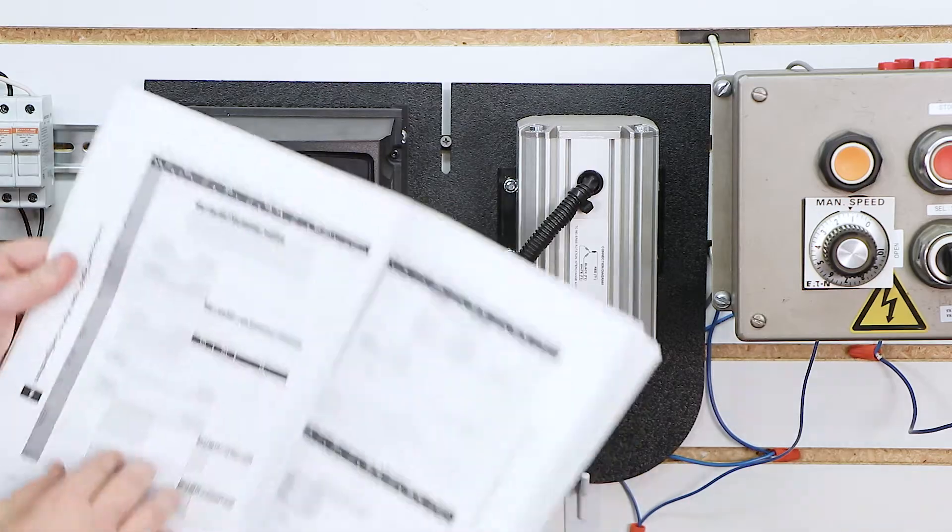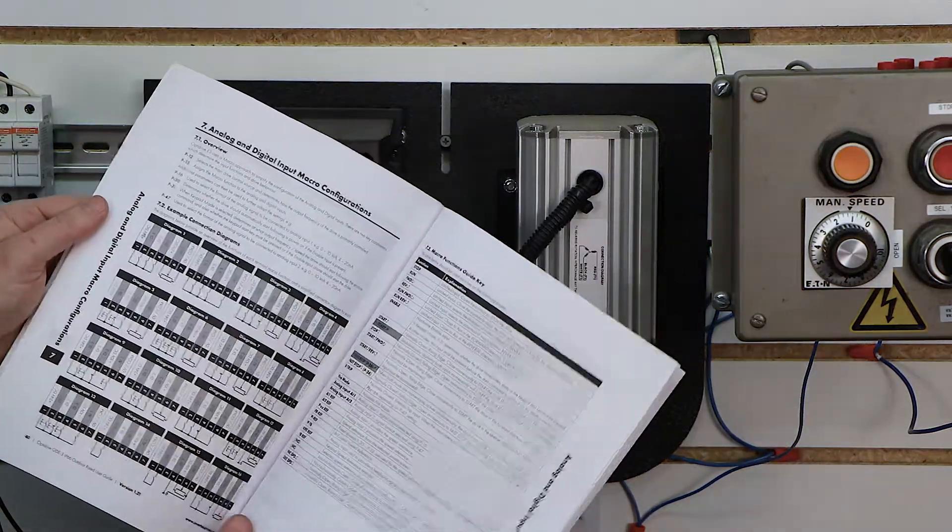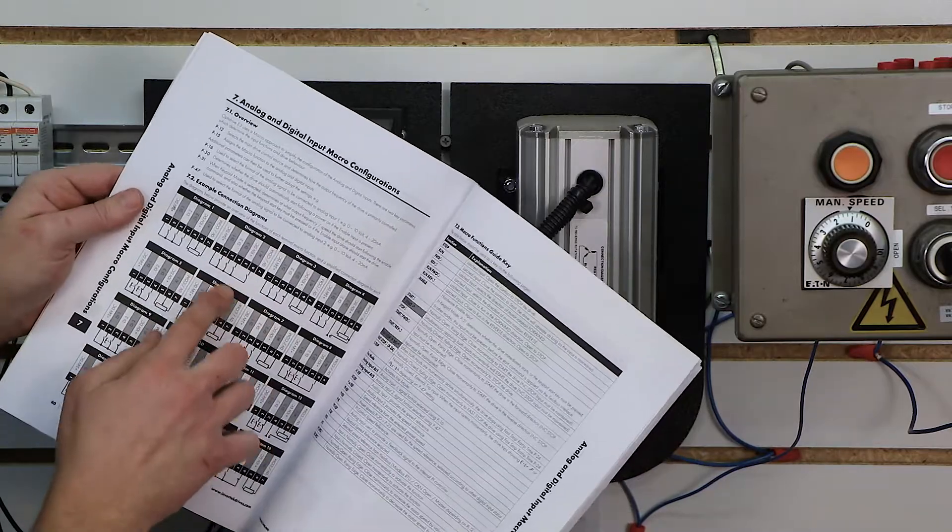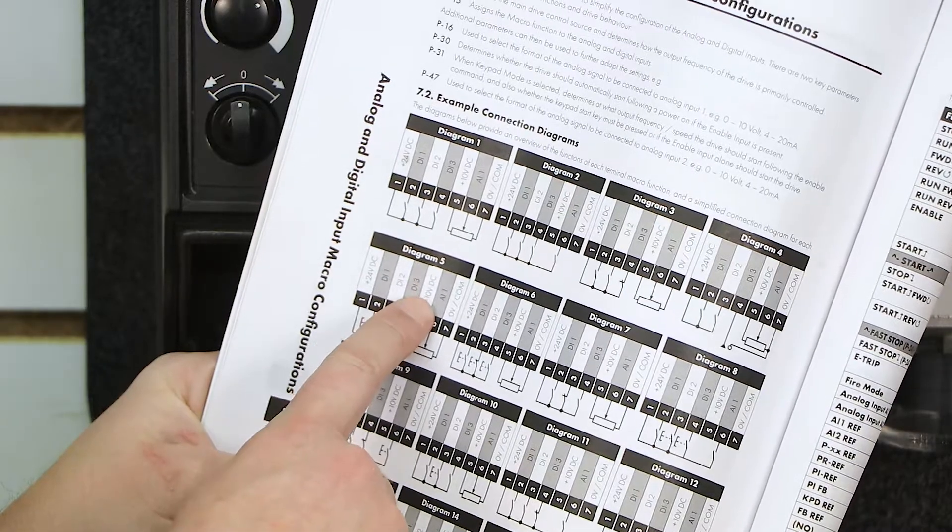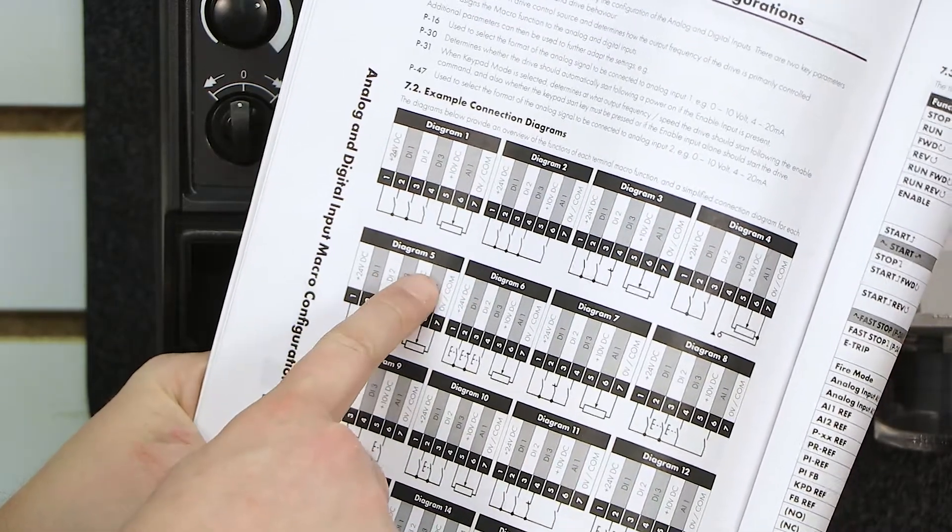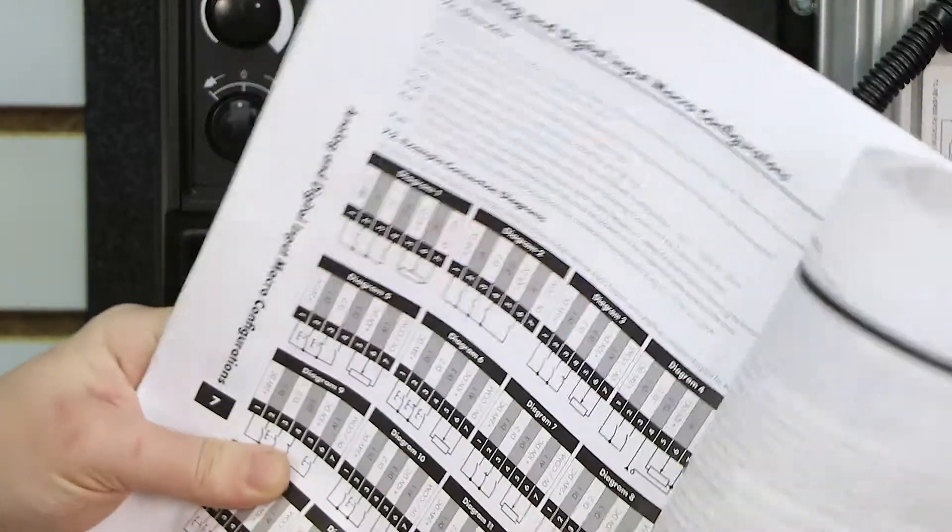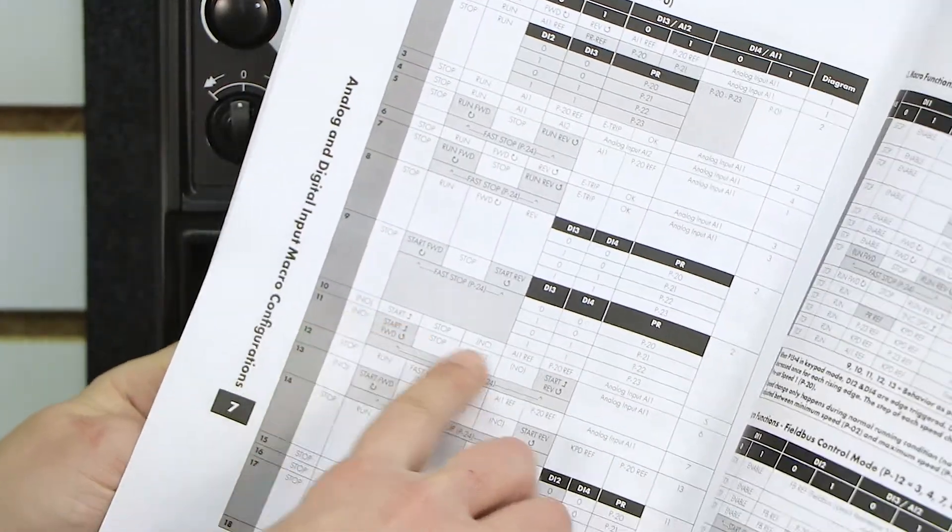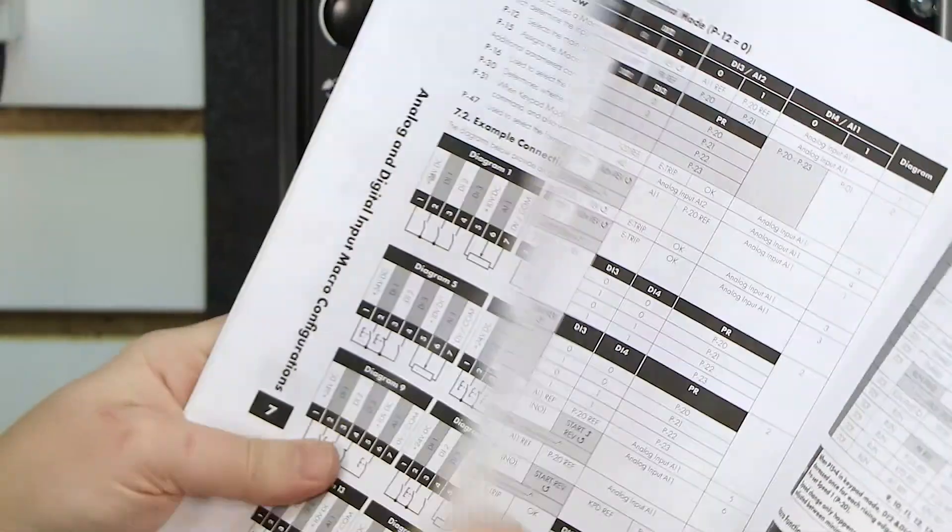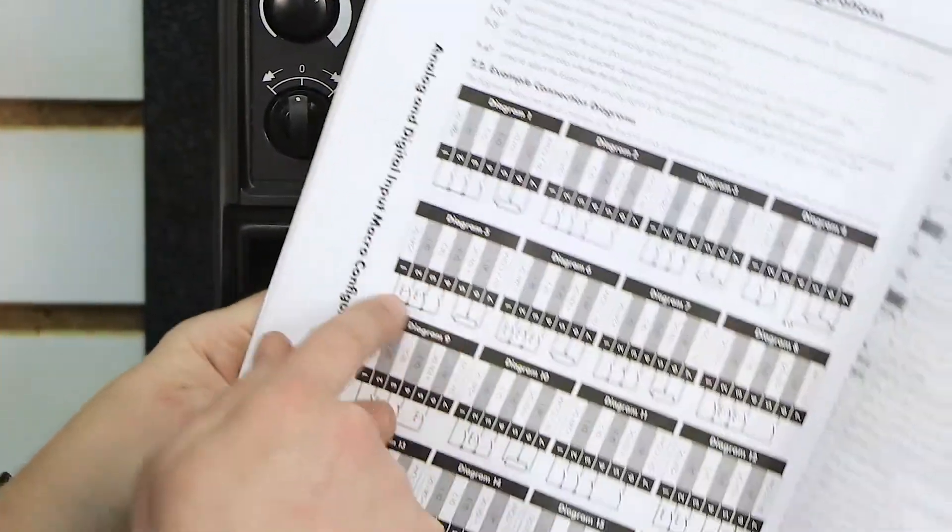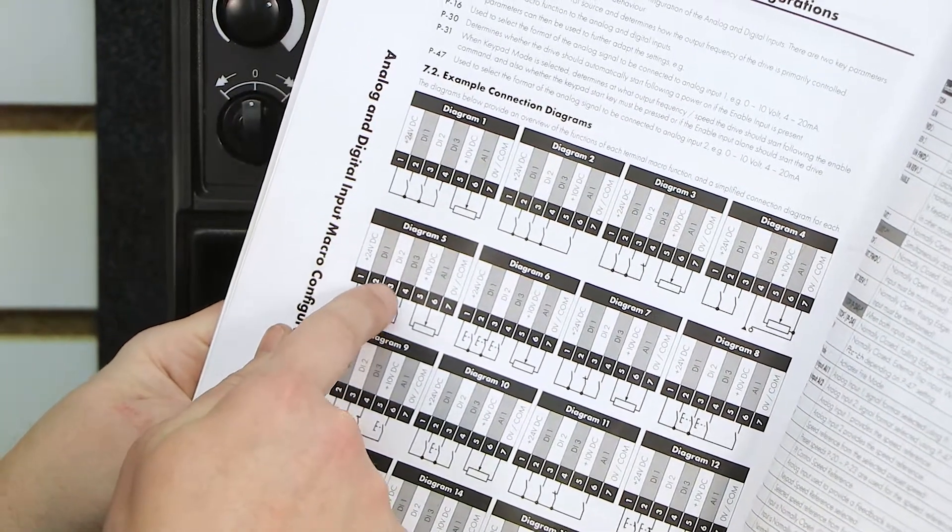If I go back two pages on my manual, or actually back one page, you'll see an electrical diagram of each of those macro settings. And we're going to be looking at diagram 5. Now you may be wondering, diagram 5, but we chose 10. But on the right hand side of that column, for that macro, on the far right you actually see which diagram it corresponds to. So diagram 5 has a normally open push button for input 2, and a normally closed for input 3.